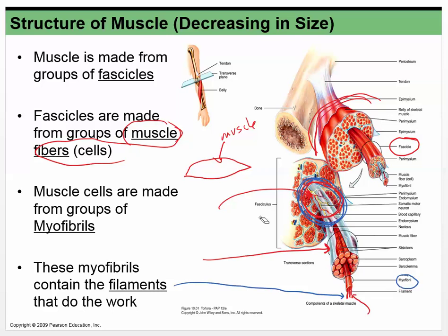If we focus on that muscle cell, it has these little myofibrils, and within each myofibril are tiny filaments — that's what's doing the work. So there's a hierarchy: the big muscle breaks down into smaller fascicles, then into actual muscle cells, and inside the muscle cell are smaller things called myofibrils, with the filaments inside those.